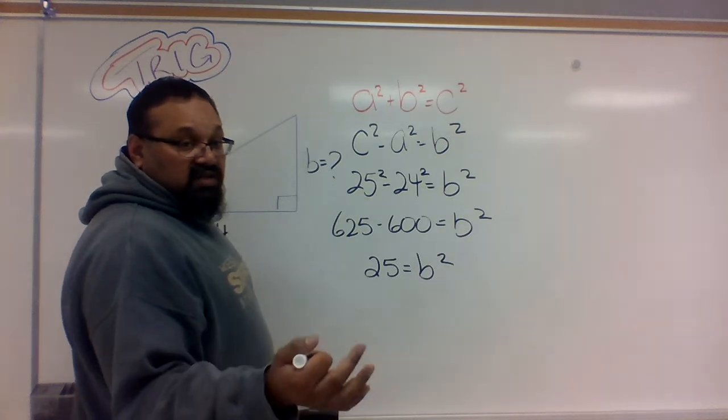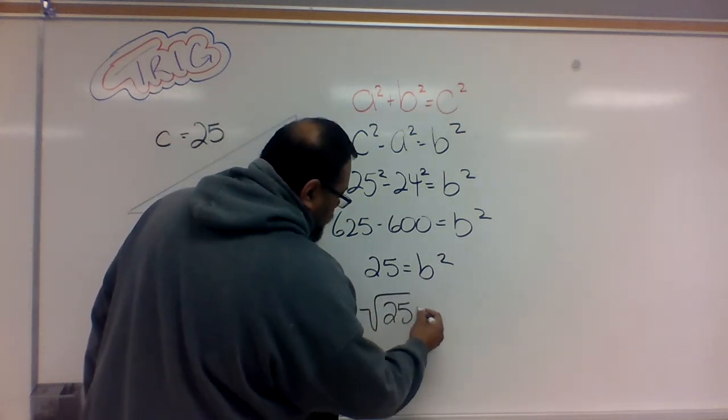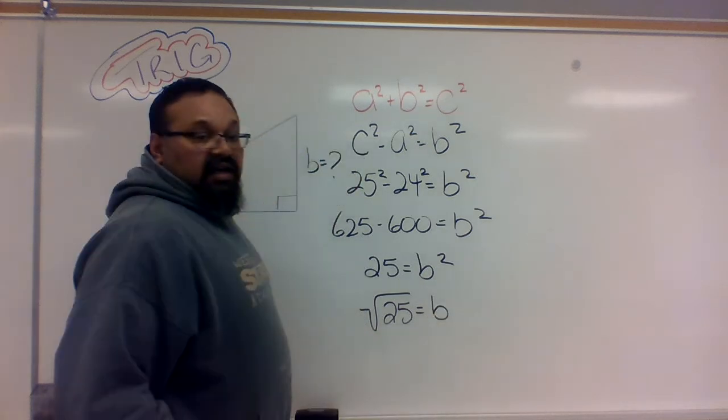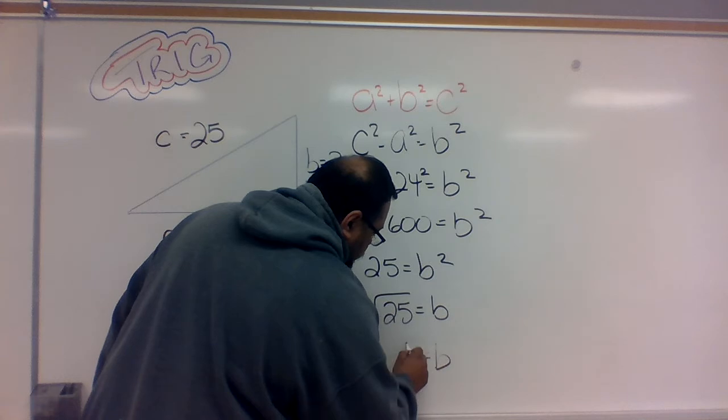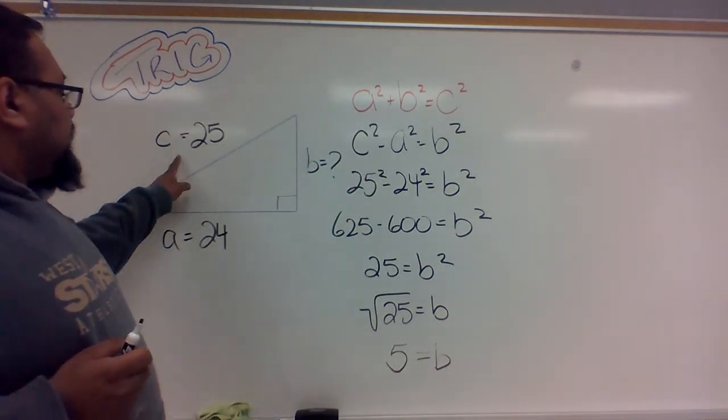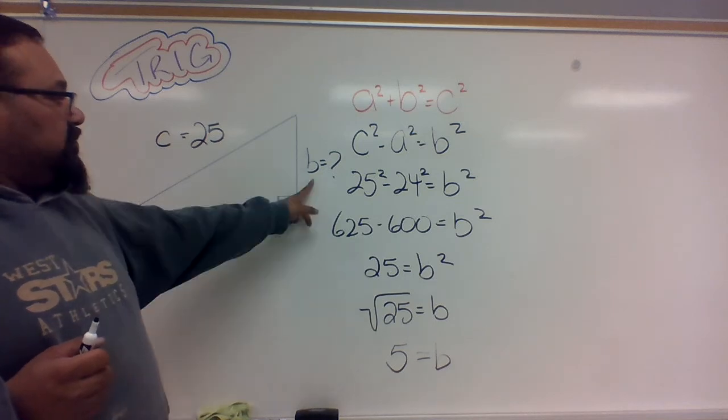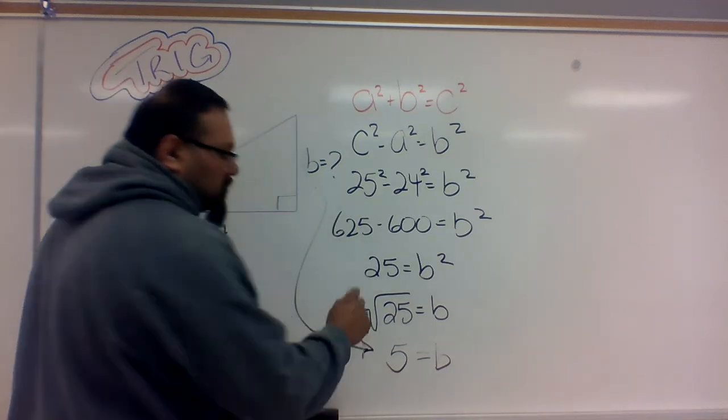To get rid of the squared, we still use our square root. The square root of 25 equals 5. So to complete our answer, that's the hypotenuse, that's the side you're given, B is actually going to be worth 5.